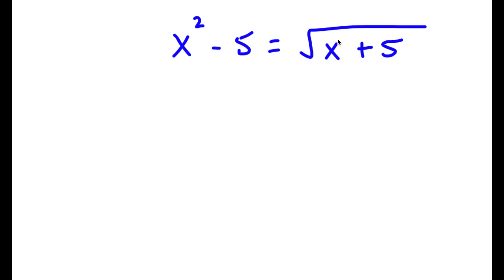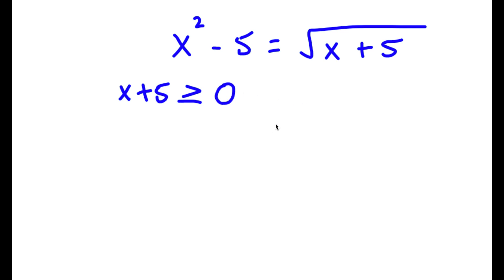Now because x plus 5 is inside a square root, and because you can't take the square root of negative numbers, we know that x plus 5 is greater than or equal to 0. And if this is true, then we know that x is greater than or equal to negative 5.